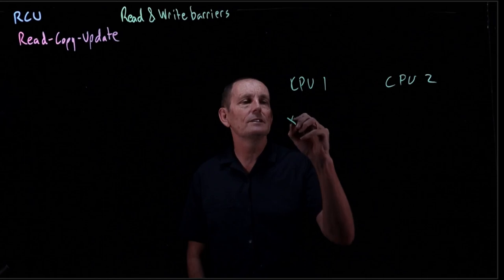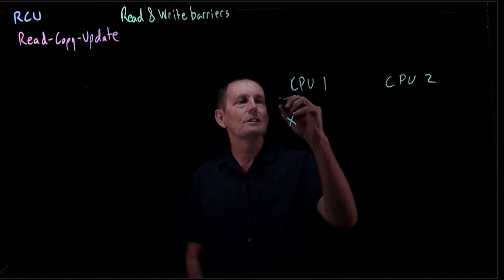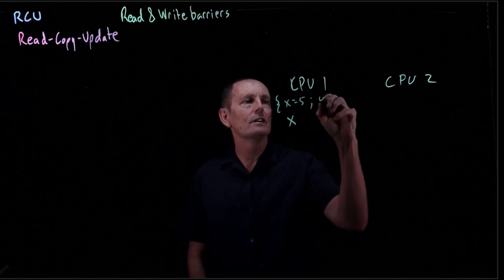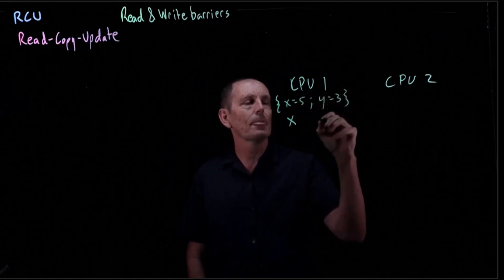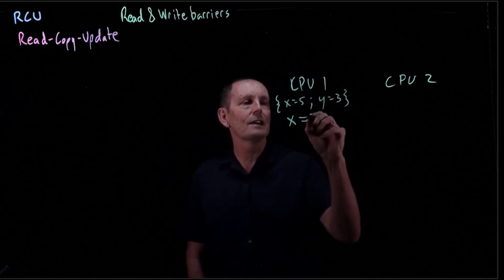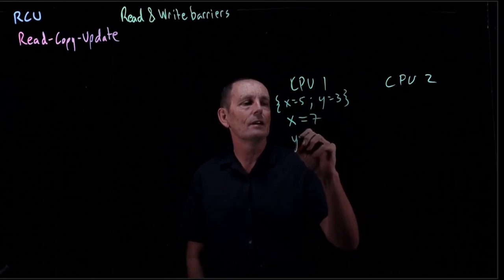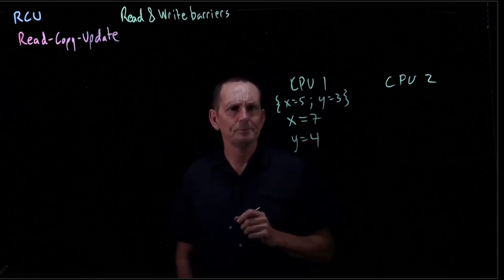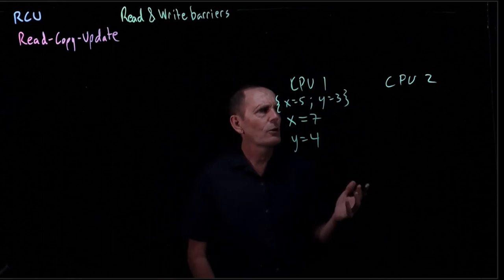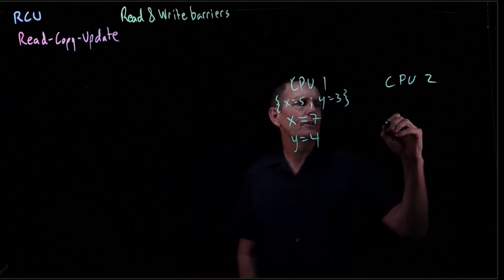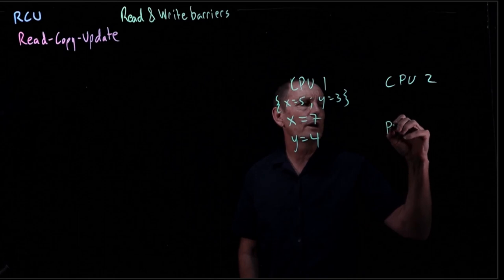let's say we have two threads in different CPUs. So on CPU 1, we say something like, to begin with, let's say x is 5 and y is 3. And we now assign x equals 7 and y equals 4. So the question is,